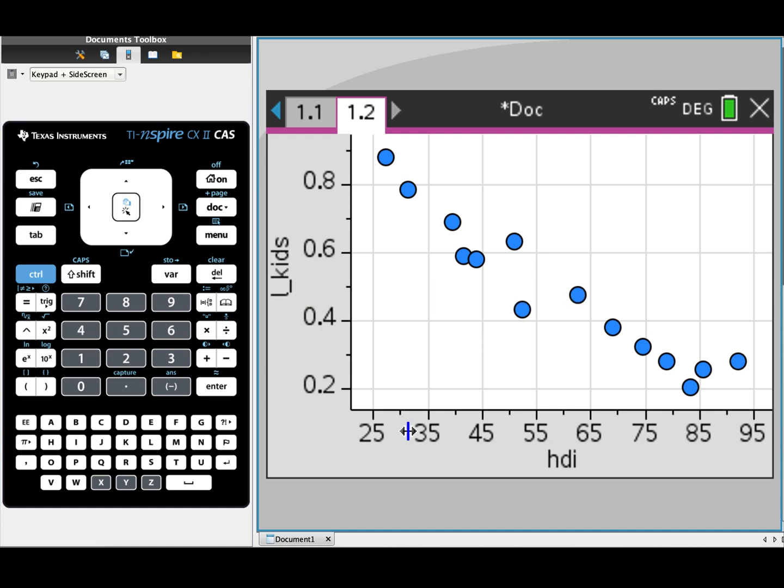Now, when you have more than one transformation available, you'll need to work out which one is the best transformation out of the three or four options. To do that, you have to find the highest R value or the highest Pearson correlation value.